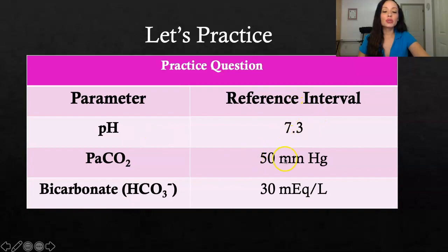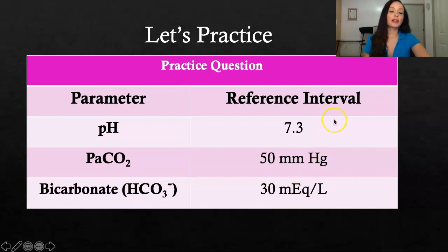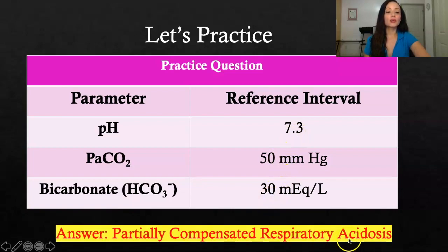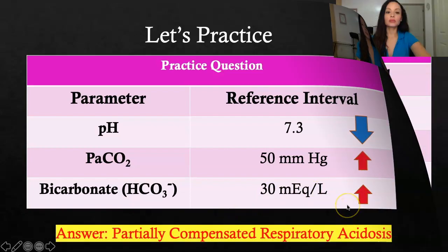Practice question two: pH is 7.3 — acidic. CO2 is 50 — elevated. Bicarb is 30 — also elevated. Arrows are facing in the opposite direction, so we know it's respiratory. pH is down, CO2 is up — respiratory acidosis. Because the bicarb is also elevated, the body is trying to fix the problem but hasn't been successful. So it's partially compensated respiratory acidosis. Any time an arrow faces in the opposite direction of the pH, it makes it respiratory.